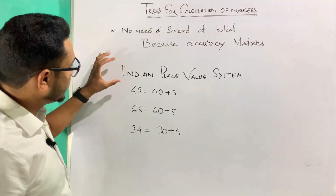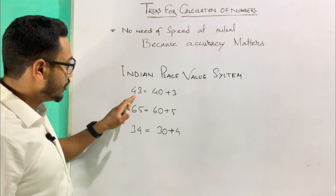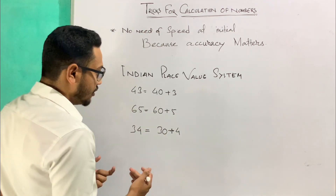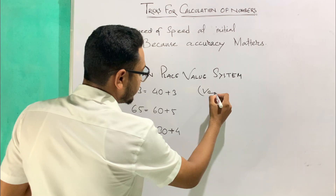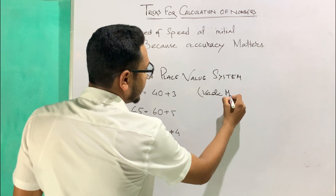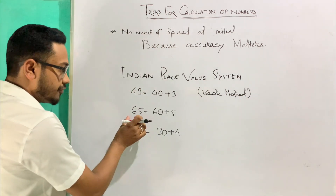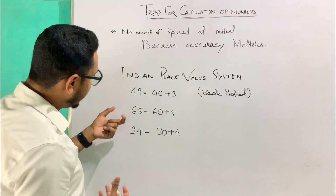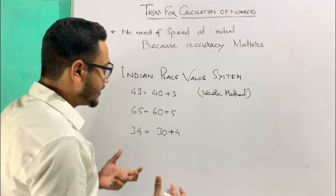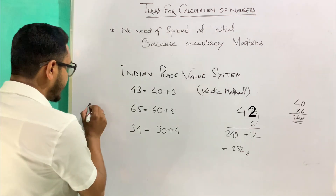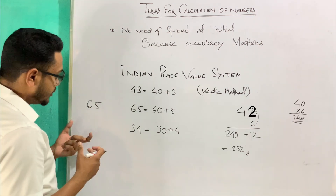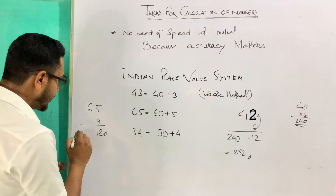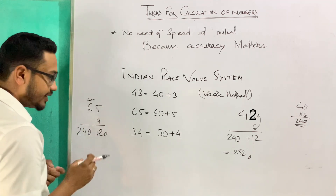As we all know the Indian place value system — just have a look. If I write 43, that means 40 plus 3, where we count numbers from left to right. This is also known as the Vedic method. Here 65 means 60 plus 5, and 34 means 30 plus 4. To multiply a two-digit number with a single-digit number, there is a certain trick. For example, 65 times 4: 4 times 5 is 20, and 4 times 6 is 24 — but I add a zero because the place value of 6 is tens.